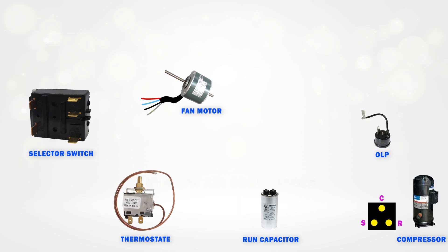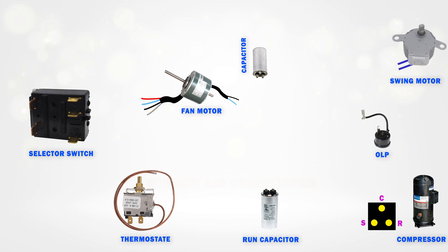In addition to that, this fan motor has two more wires that are used for connecting a capacitor. We'll go over all these wire connections during the wiring part. In window ACs, there's a grill that rotates to change the direction of airflow. This is done using a swing motor. To turn this motor on or off, we use a simple swing switch.